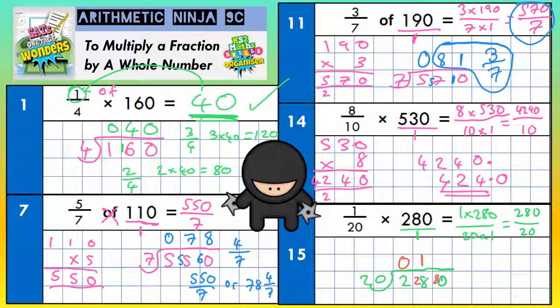And 20s into 80 goes exactly 4 times: 20, 40, 60, 80. That's 4 times. So 1 20th times 280 is 14. Final answer, 14. Thank you.